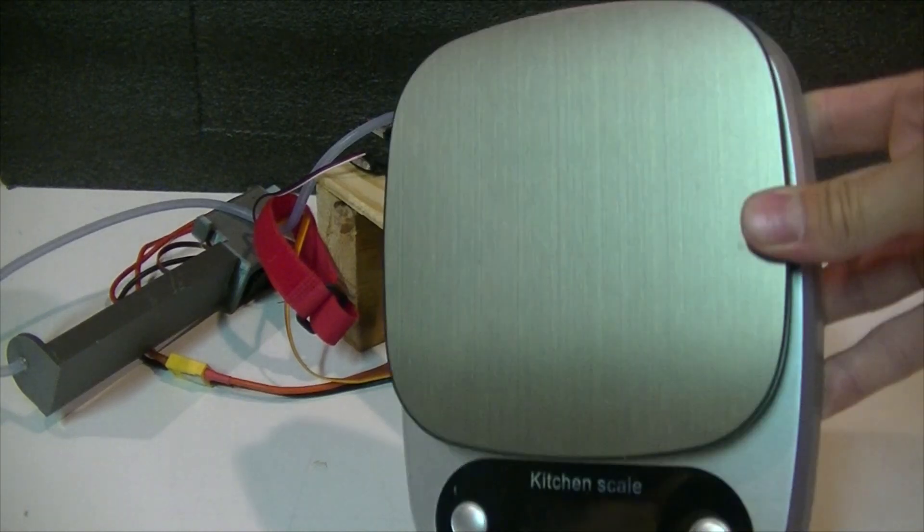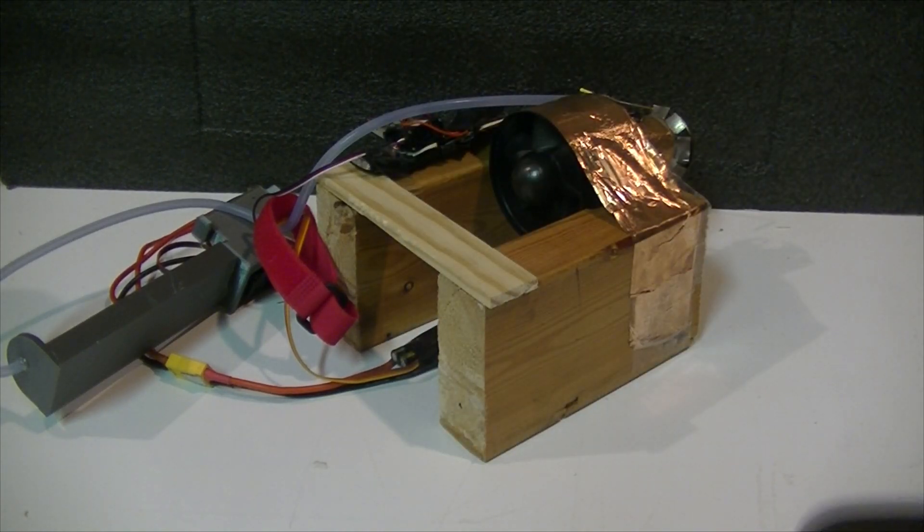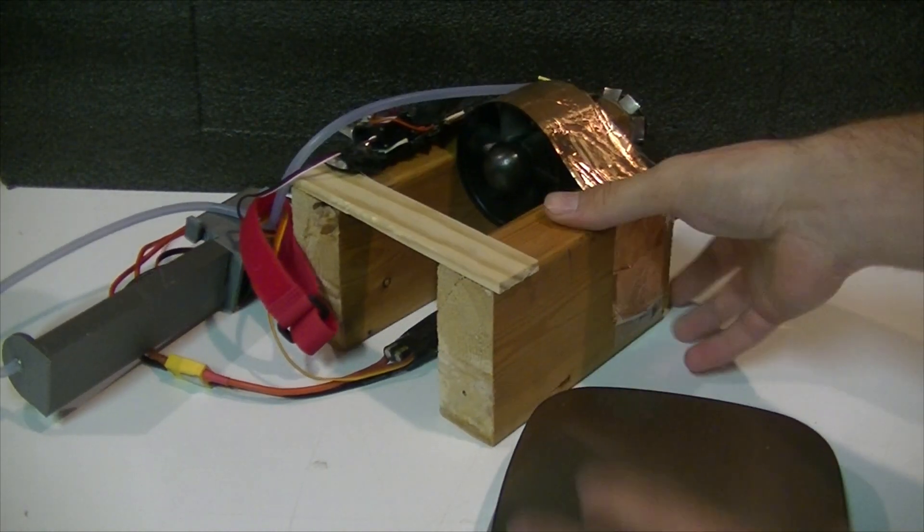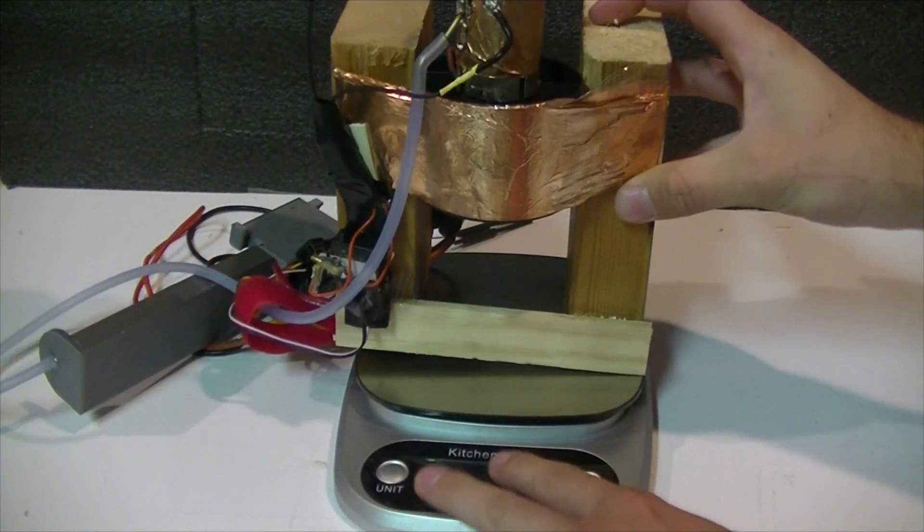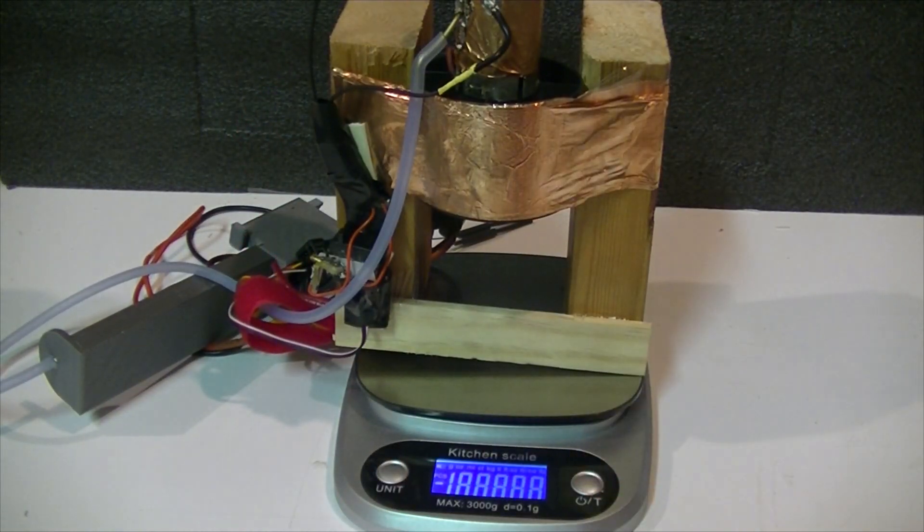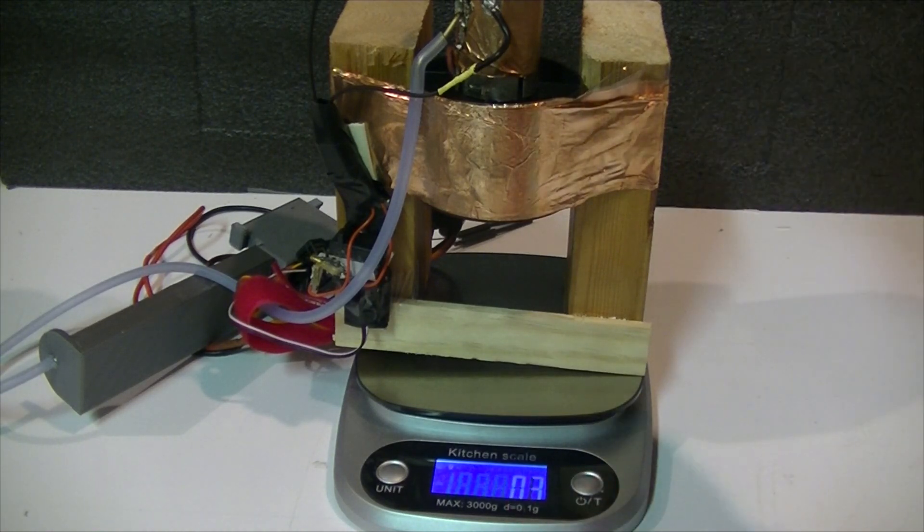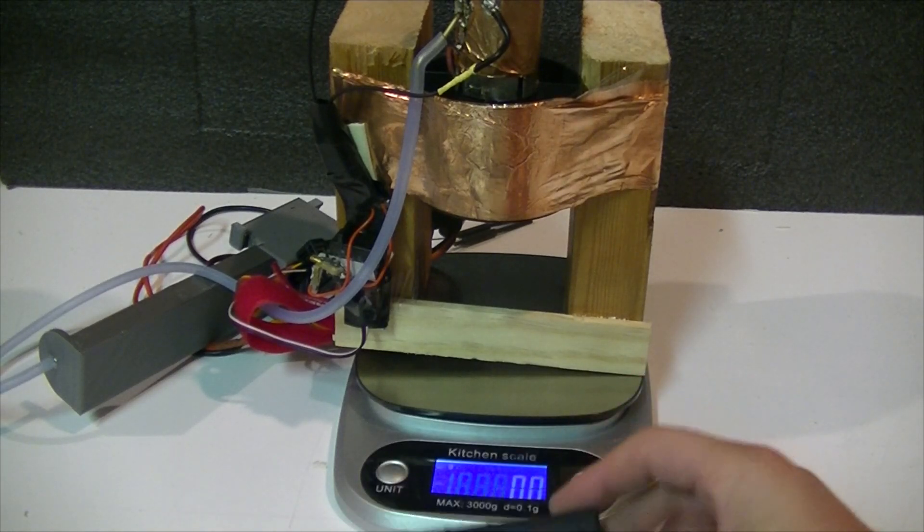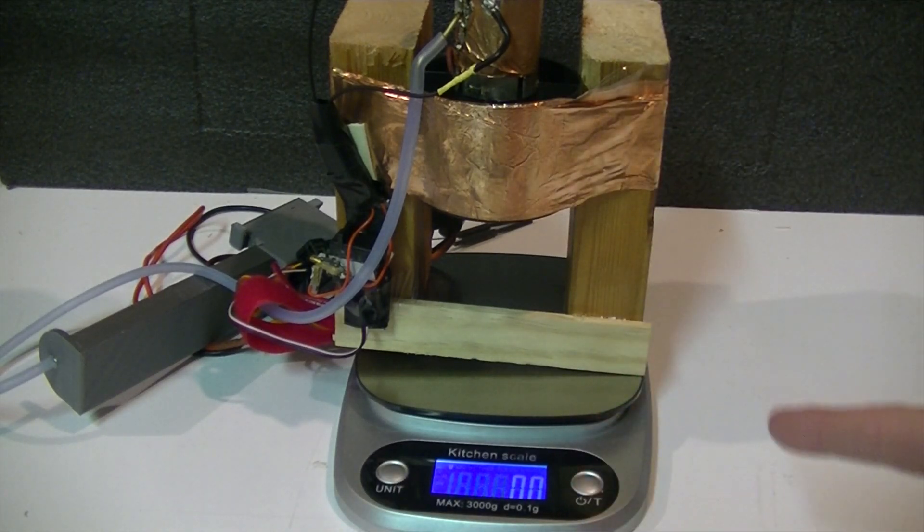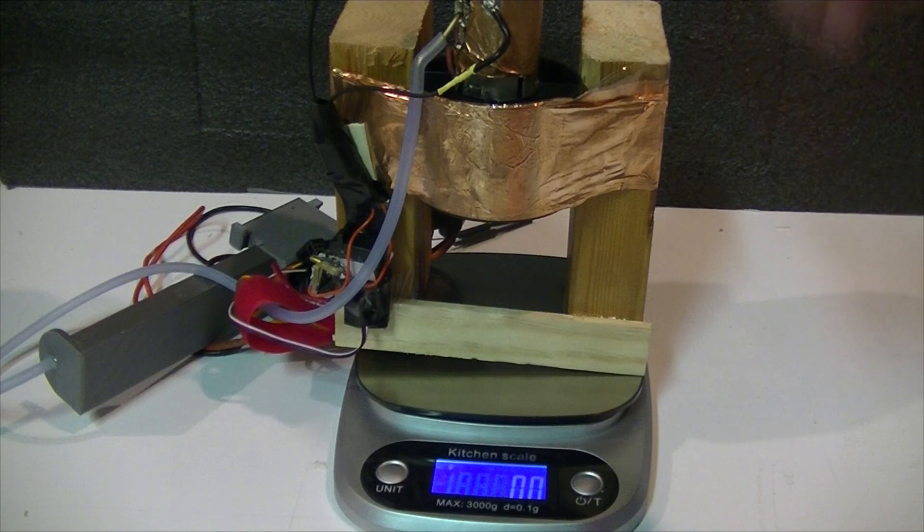I'm also using a normal kitchen scale. What I'll do is place this on the kitchen scale, turn it on, and it'll zero out. Then whatever thrust this produces, I can measure it and look at the watt meter to calculate grams per watt. I'm going to do it once with the afterburner on and once with the afterburner off.